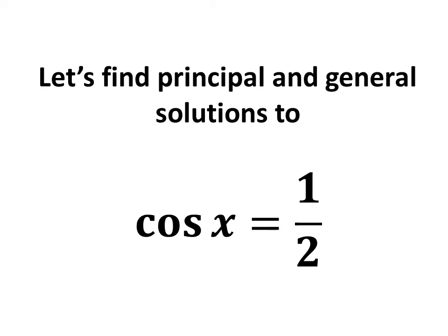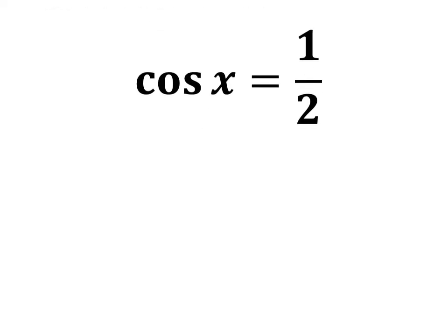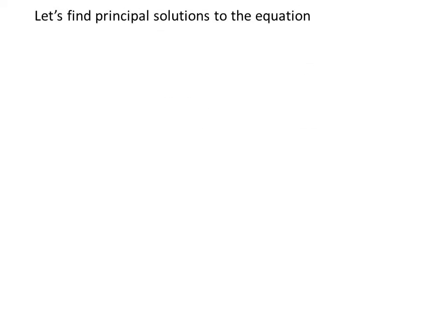In this video, we will learn to find the principal and general solutions to the equation cosine of x is equal to half. Let us first find the principal solutions. We know the solutions to the trigonometric equation for which x is greater than or equal to zero and less than two times pi are the principal solutions.